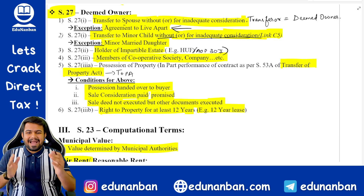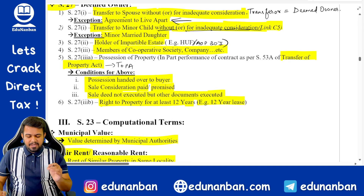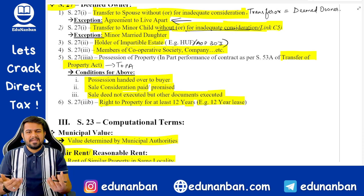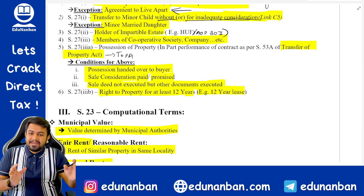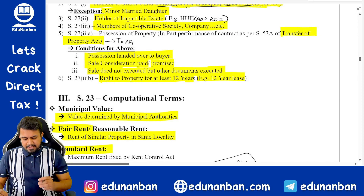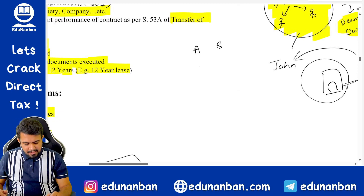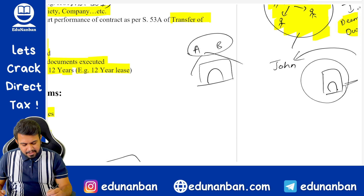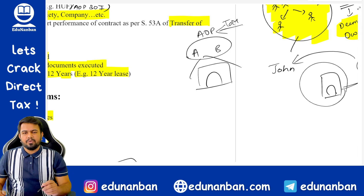If me and my wife have an official agreement to live separately, this provision will not apply. Point two: transfer to a minor child without consideration or for inadequate consideration — the transferor will be the deemed owner. Exception: minor married daughter. If property is transferred to a minor married daughter, this concept will not apply. Point three: holder of impartable estate — if two people A and B jointly own a property but both do not know their share, both together will be considered as an Association of Persons (AOP), which will be the deemed owner and pay tax.